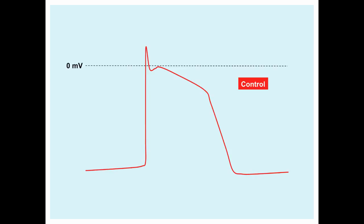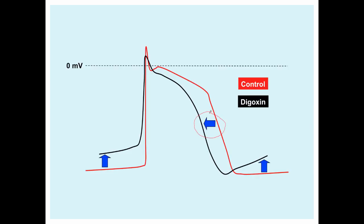Directly, digoxin can decrease the action potential duration and effective refractory period of cardiac myocytes. If we compare the duration of the action potential and the effective refractory period between control-treated cells and those treated with digoxin, we can see the difference. As the dose of digoxin is increased, the resting membrane potential is reduced or becomes more positive. As a consequence of this action, over time, delayed after-depolarizations will appear, which leads to abnormal impulses and ectopic beats in the Purkinje system and ventricular muscle, which can progress to tachycardias and fibrillation.